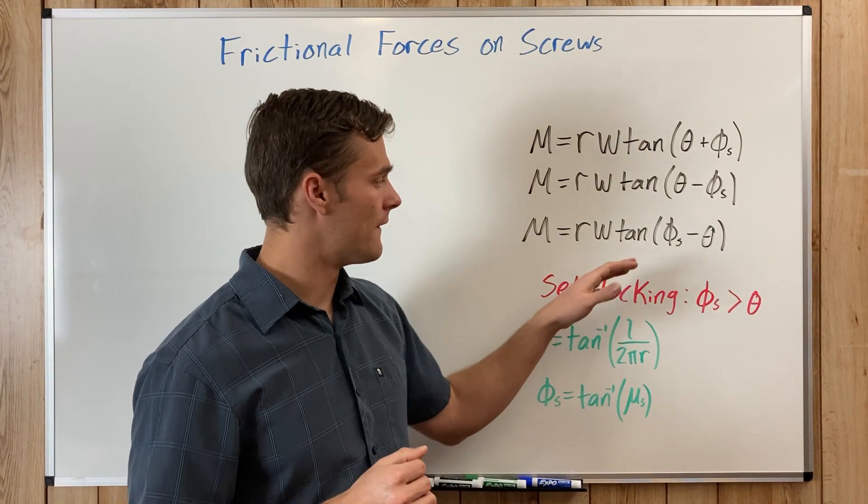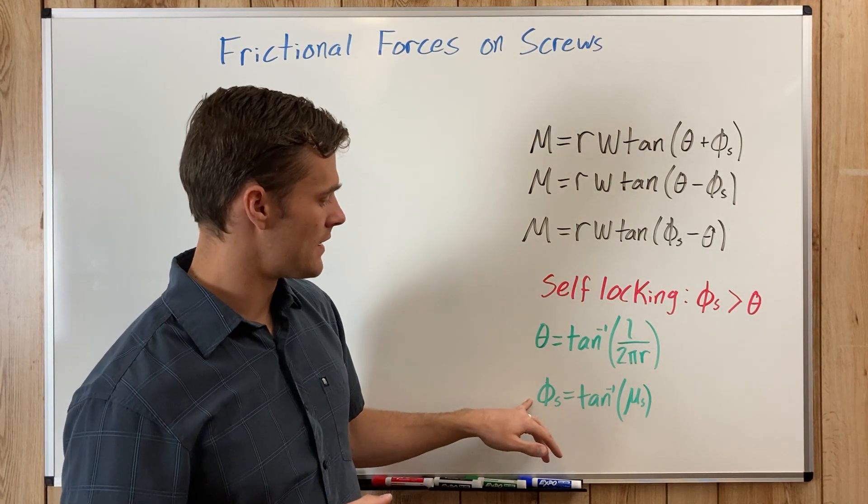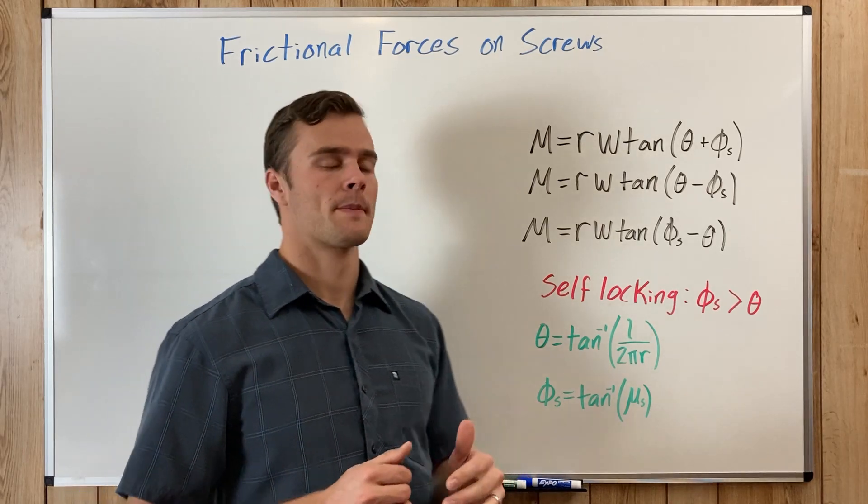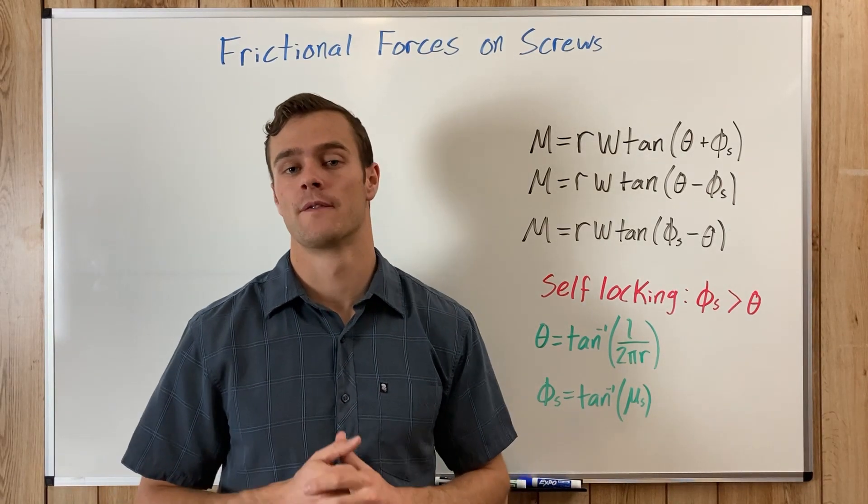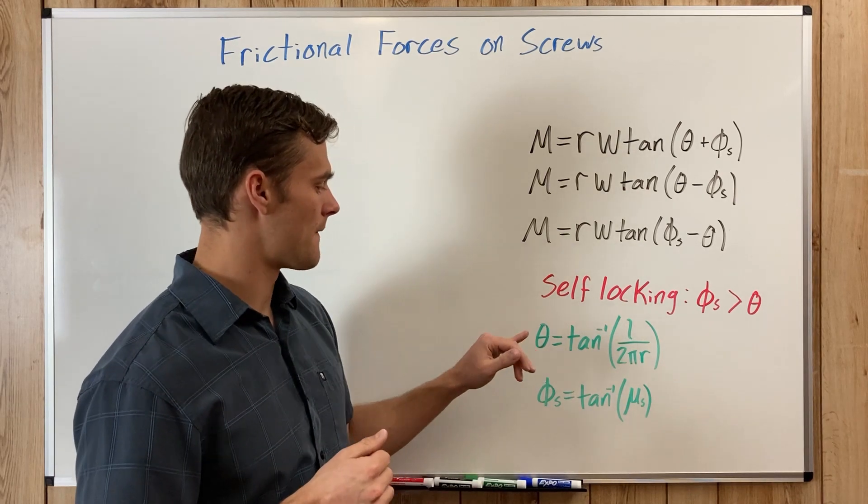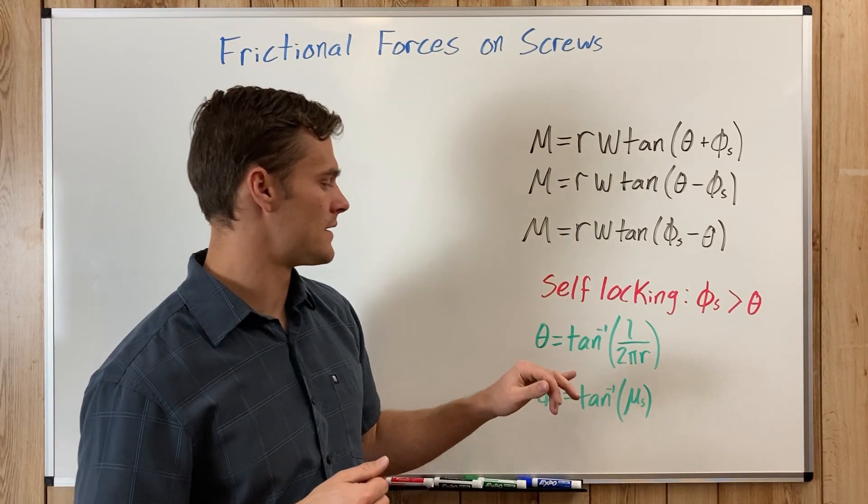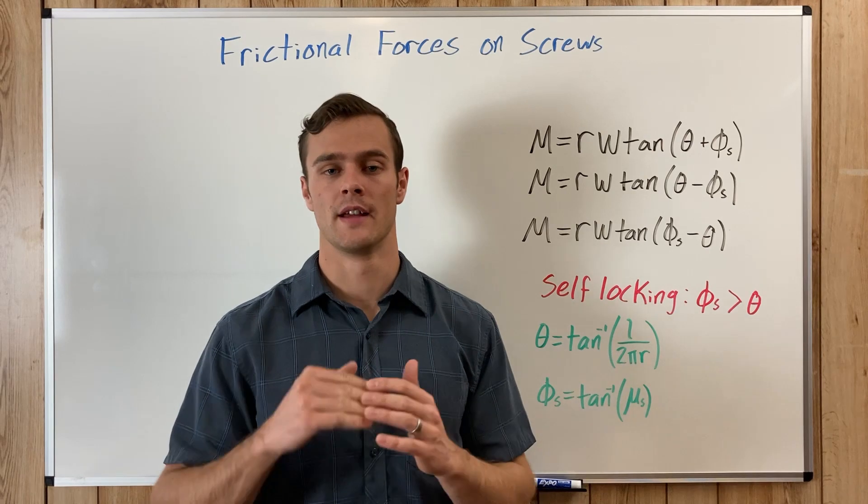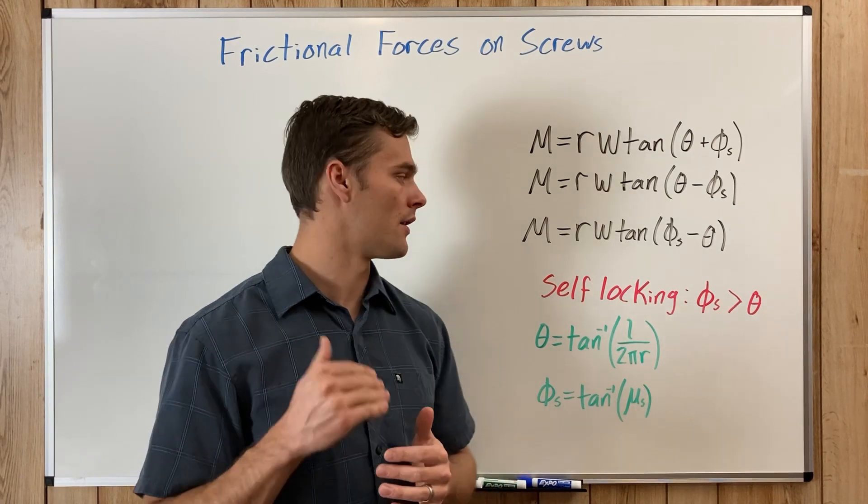V is the angle at which the normal force and friction force are acting on, and the angle theta is the angle of the incline of the threads on the screw.